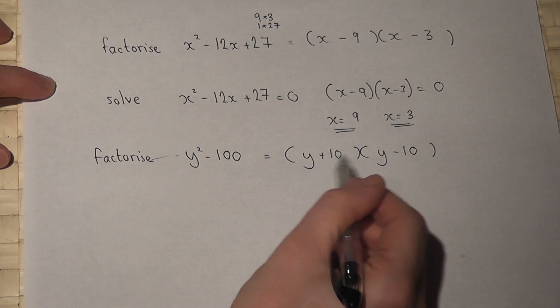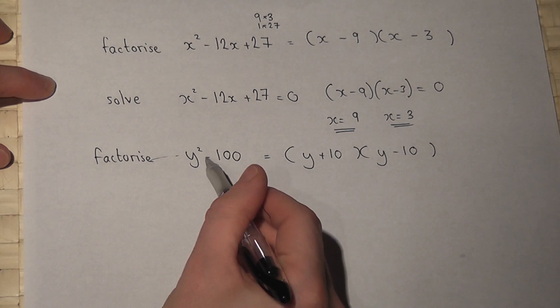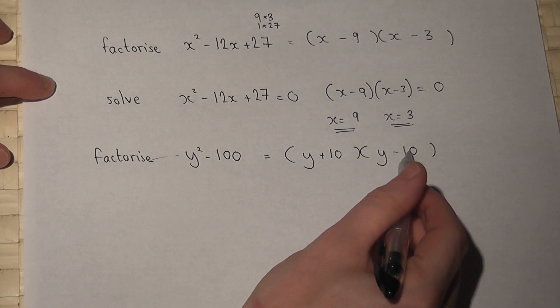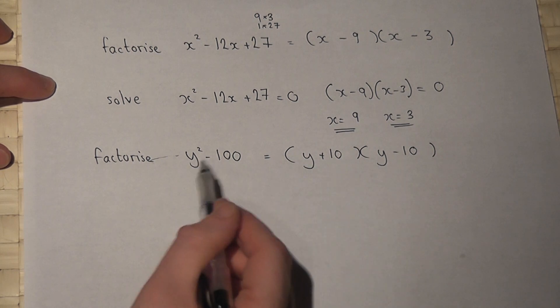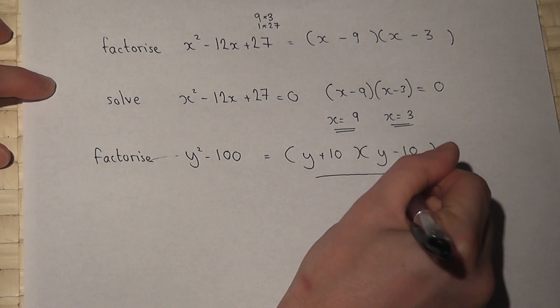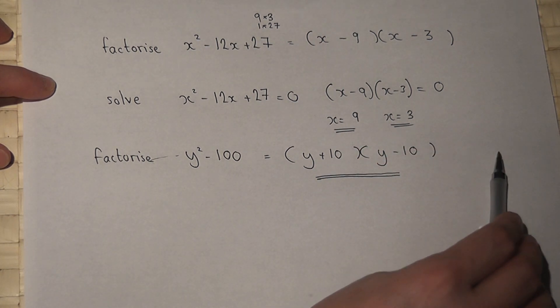10 × -10 = -100, and there are no y terms because 10y - 10y cancel out. This expands to give y² - 100, which is called the difference of two squares.